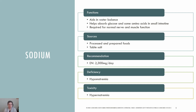Sodium is the first electrolyte we will review. Functions of sodium include aiding in water balance, helping to absorb glucose and some amino acids in the small intestine, and is also needed for normal nerve and muscle function. While sodium is important, normal physiological functions can be met with much less than 2,300 mg a day, which is the daily value. Sodium is naturally found in whole foods; however, the majority of an individual's intake in the U.S. is through processed and prepared foods, as manufacturers add salt to improve texture and flavor and also as a preservative. Sodium balance is regulated by the kidneys, so deficiency and toxicity are not very common.